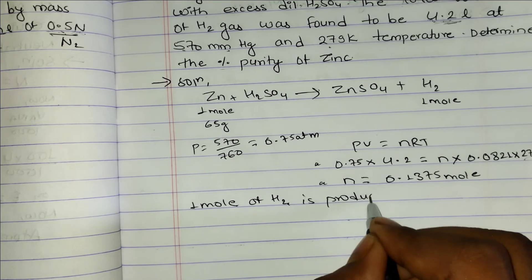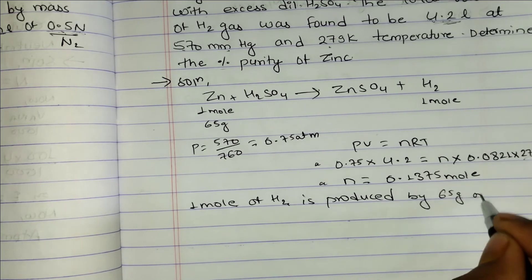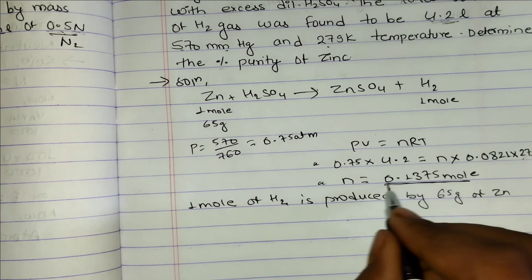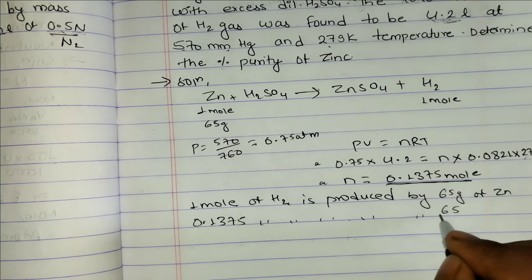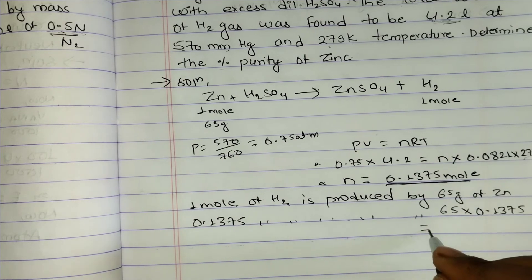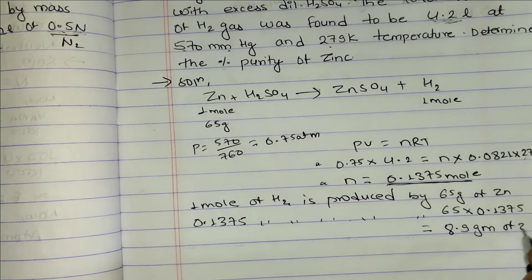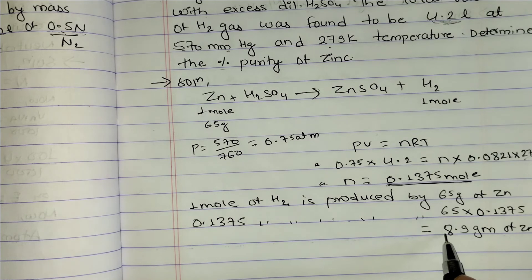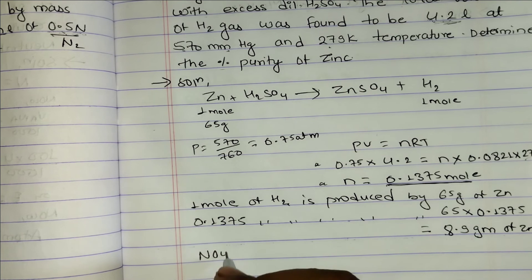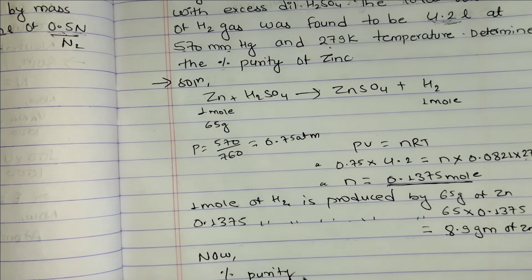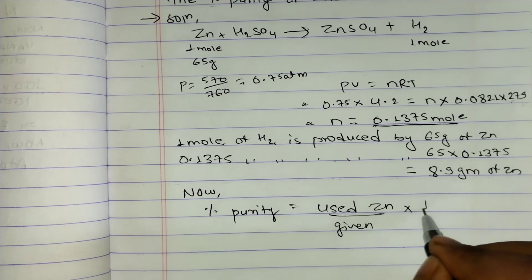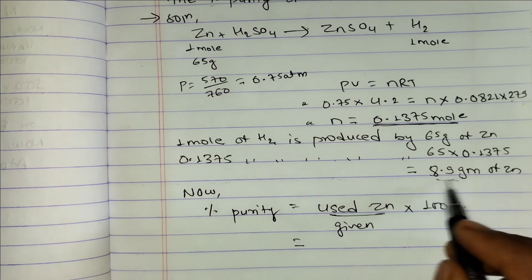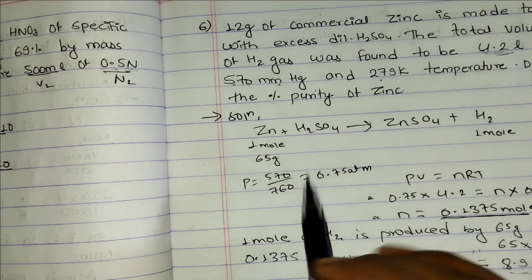Since 1 mole of H₂ is produced by 65 g of zinc, 0.1375 moles of H₂ is produced by 65 × 0.1375 = 8.9 grams of zinc. Percentage purity = (zinc used / total zinc given) × 100 = (8.9 / total) × 100.